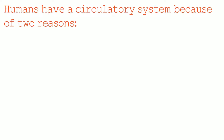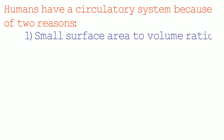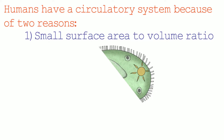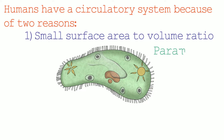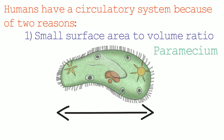The first reason is that we have a small surface area to volume ratio. This means we are unable to take in substances in sufficient quantities to allow us to survive. Smaller organisms, however, have a greater surface area to volume ratio, meaning they can take in substances in sufficient quantities to survive. For example, a paramecium is a single-celled organism with a large surface area to volume ratio, which means it can take in substances in sufficient quantities in order to survive.